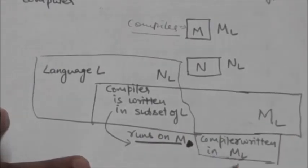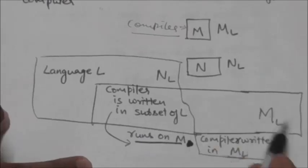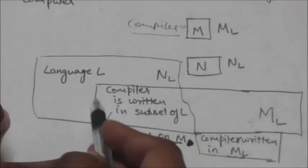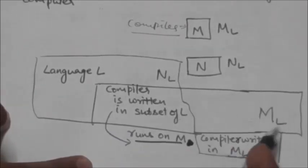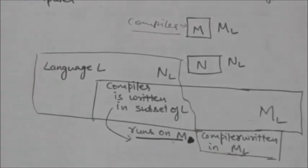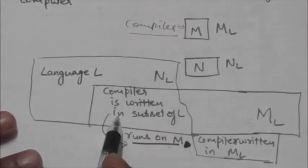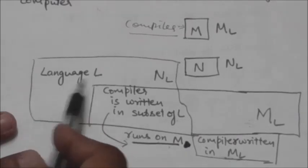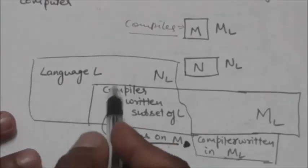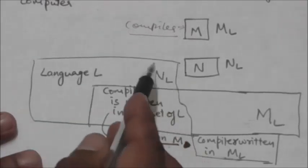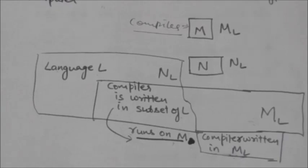This compiler written in machine language ML will translate the compiler written in the subset of language L into machine language ML, so that compiler can be executed on machine M. In this way we can implement the cross compiler — it will run on machine M but translate language L programs into machine language NL, producing executable code that can run on machine N.